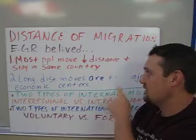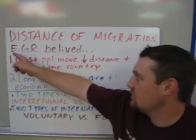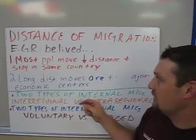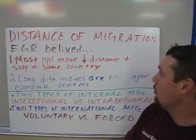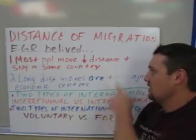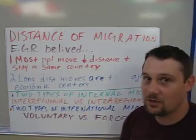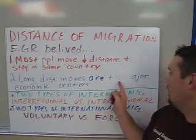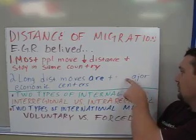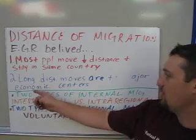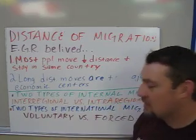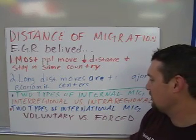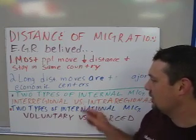Here we have distance of migration. When you see the acronym EGR, that is E.G. Ravenstein. He believed in the 1800s that most people move short distances and stay in their same country or region. He also believed that people who move long distances tend to move toward major economic centers. Overall, there are two types of migration: internal and international, and within those two types there are two more subtypes each.